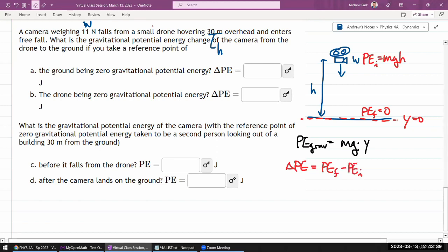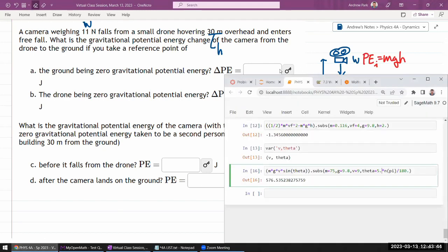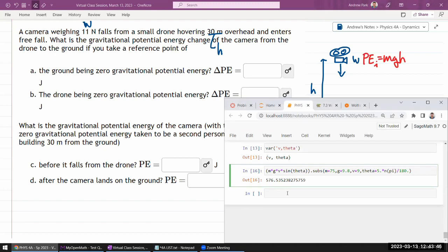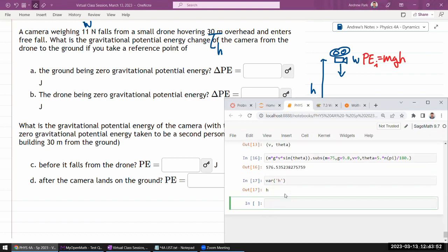So it's going to be mgh. Let me just make sure it seems so simple. Let me make sure I'm not making any mistakes. My difference in gravitational potential energy is m times g times h.